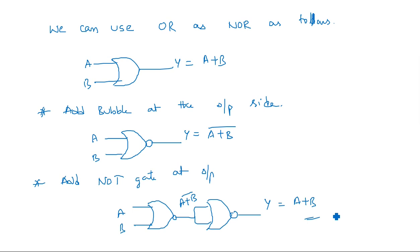In summary, in this video we have seen how an AND gate can be converted into NAND gates and NOR gates, and how an OR gate can also be converted. The NOT gate conversion is straightforward — simply combine inputs of a NAND or NOR gate together. Thank you.